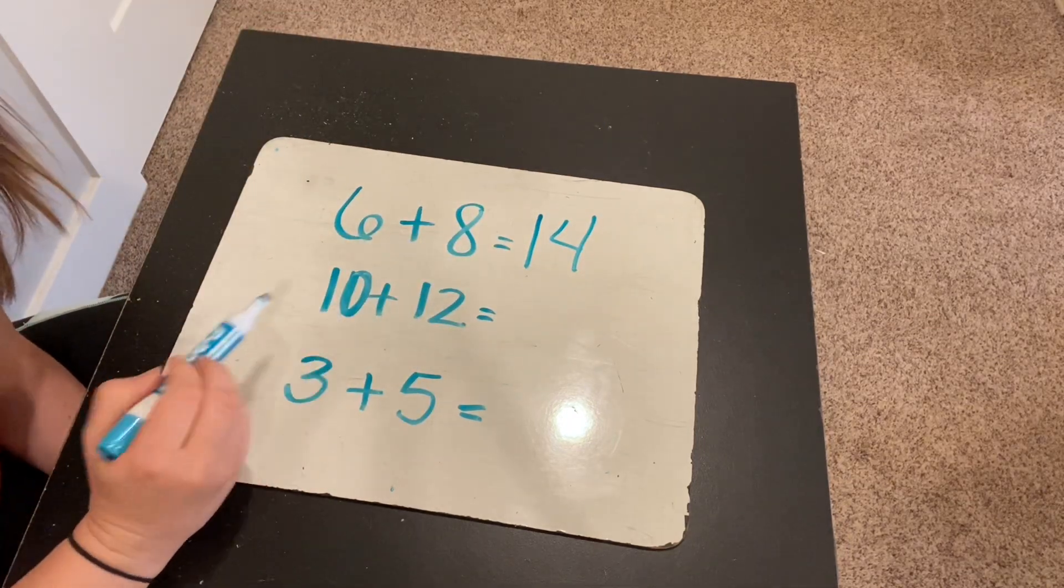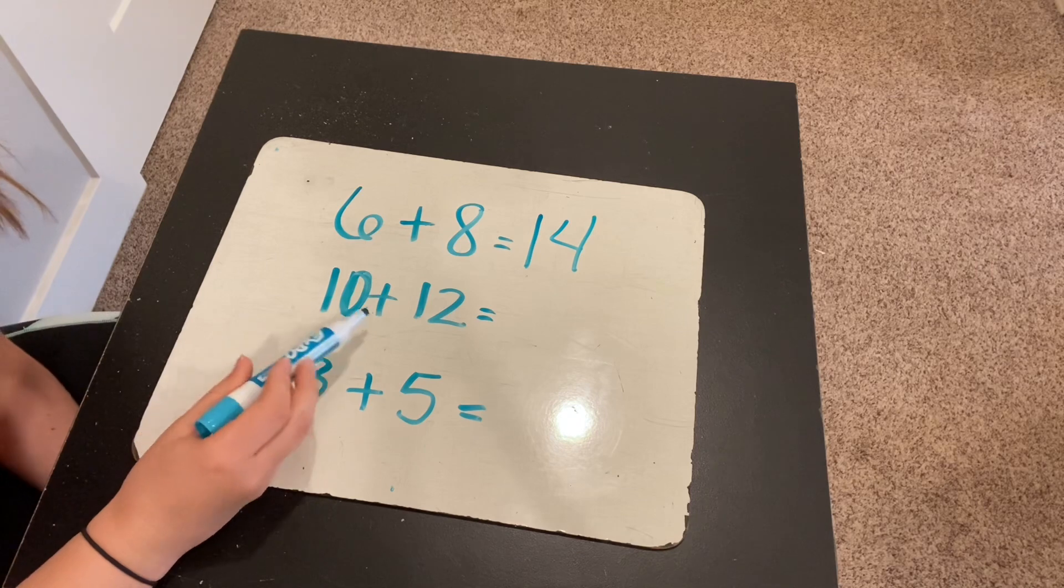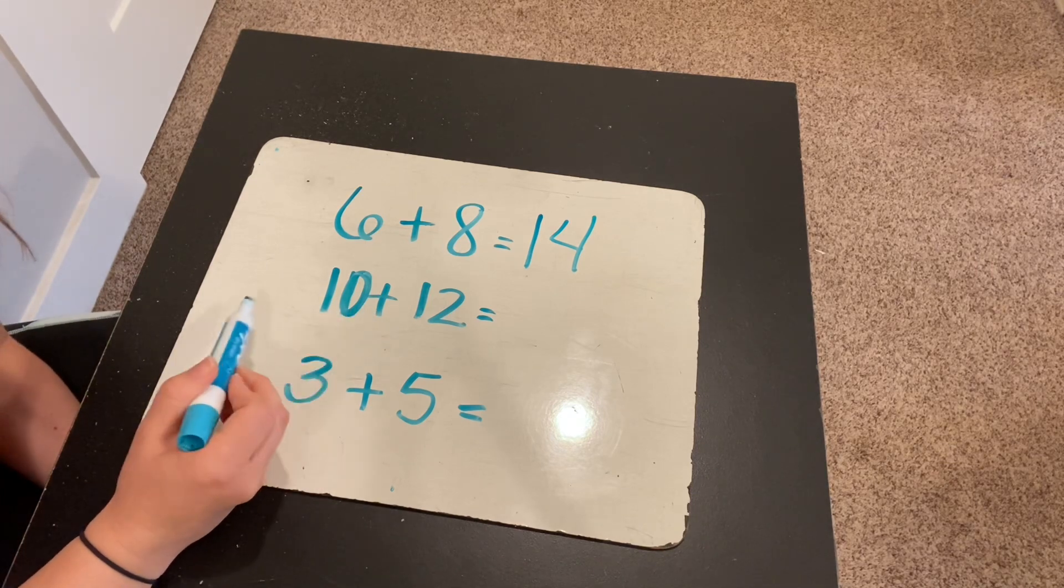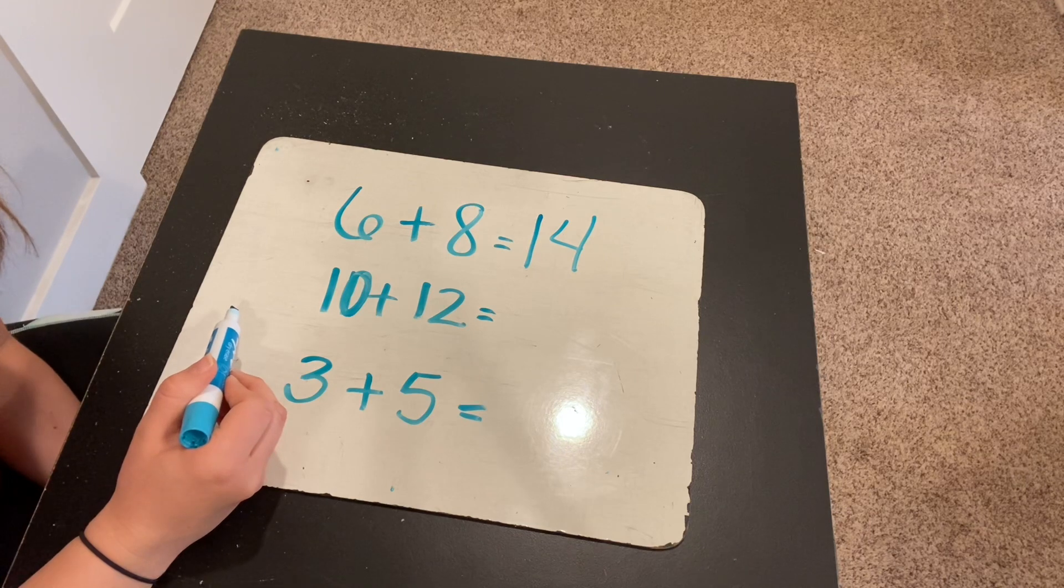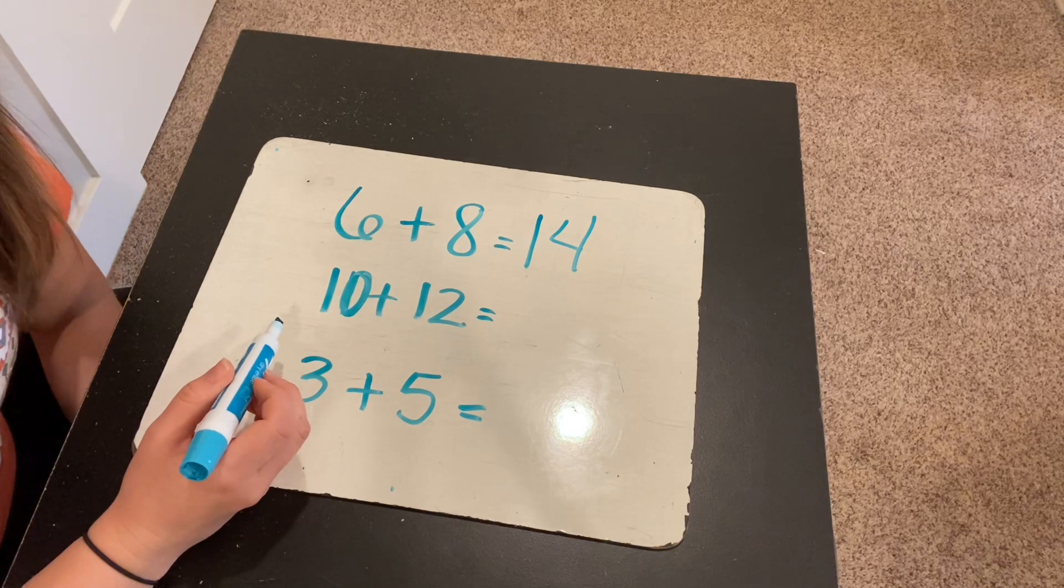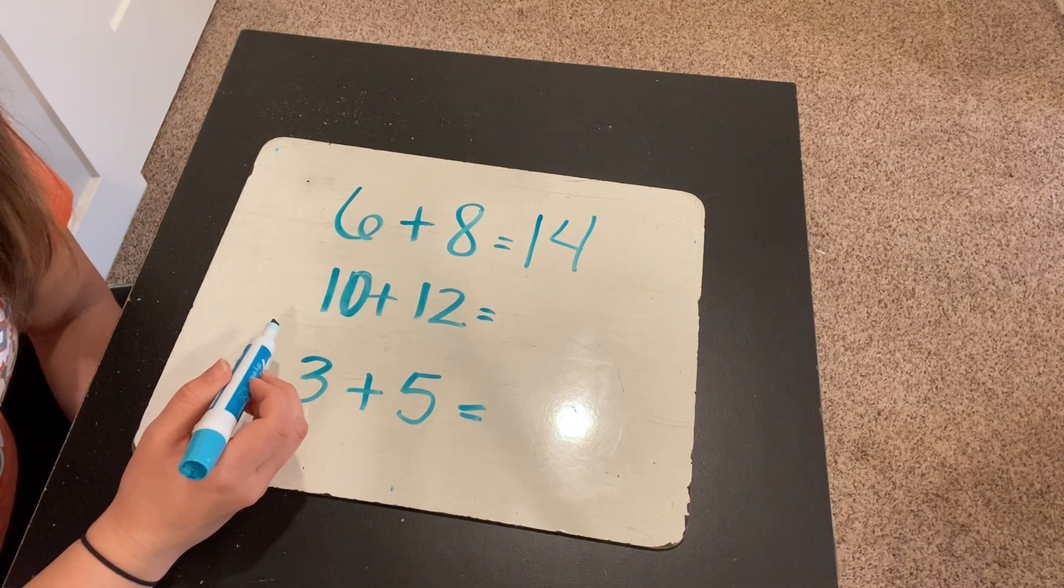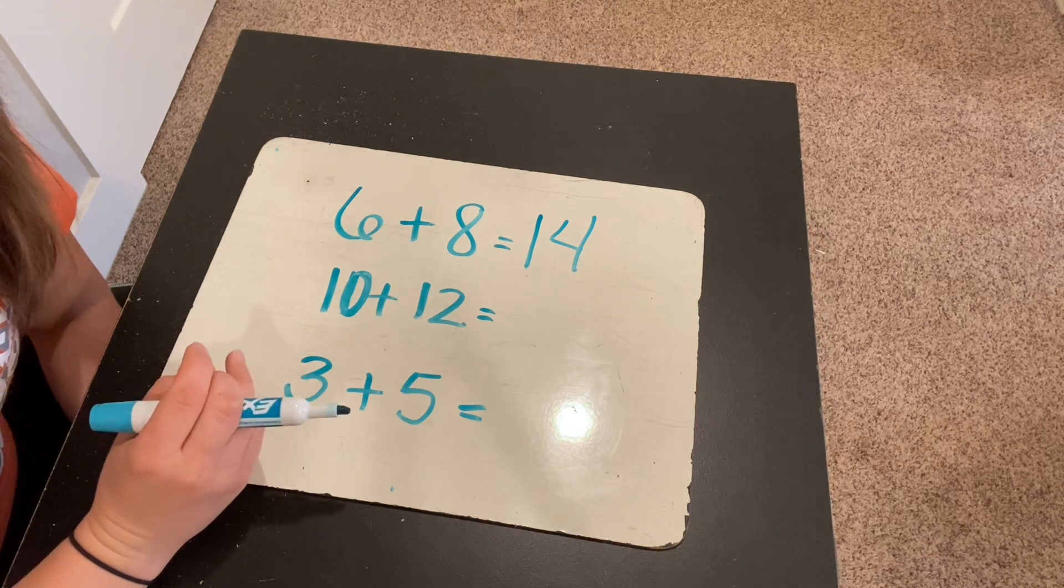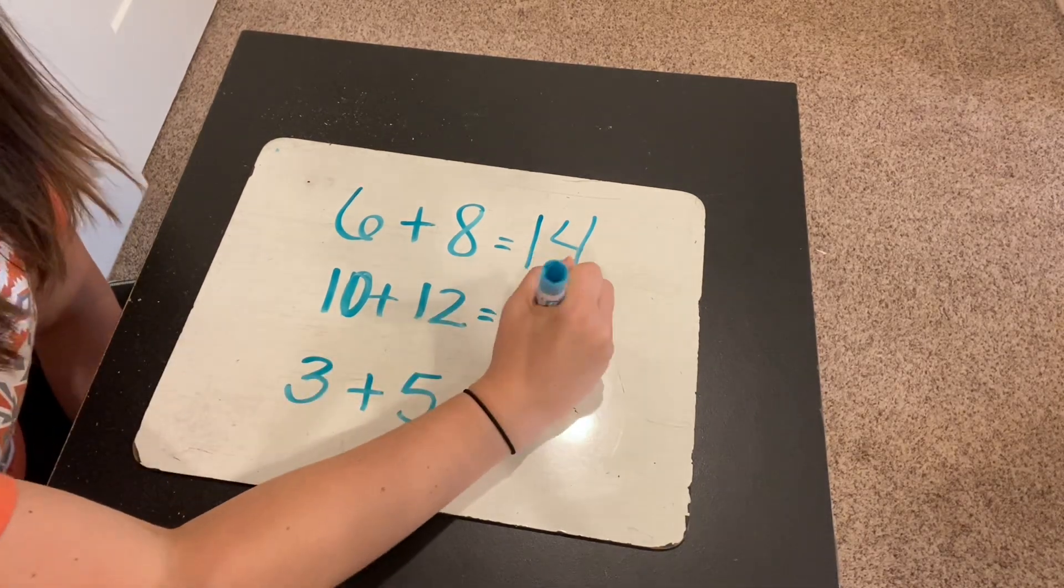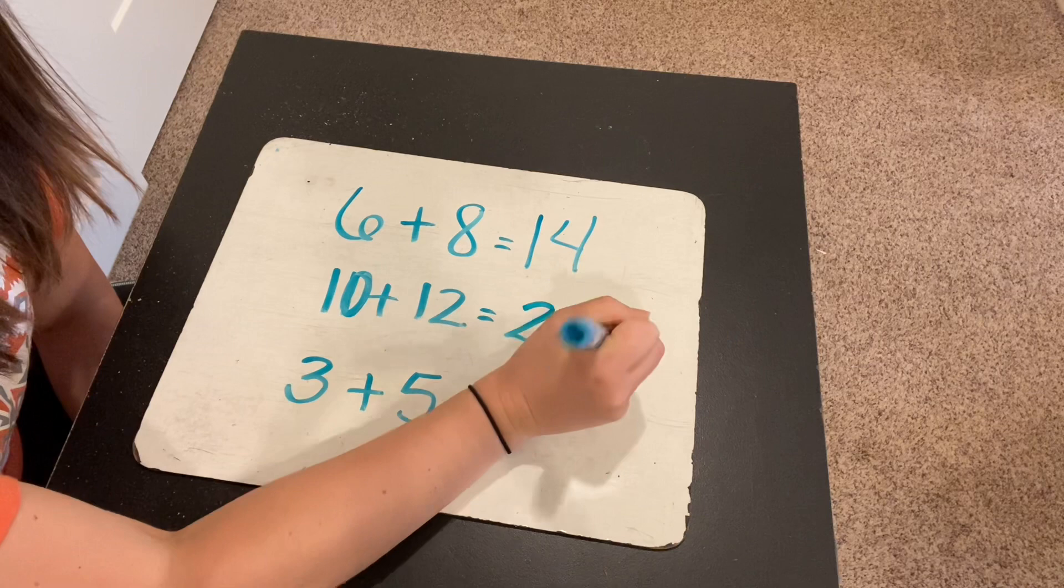All right, 10 and 12. What number comes between 10 and 12? 10 plus 12. What number comes in between 10 and 12? 11 comes in between 10 and 12. So what is 11 plus 11? If you don't know that double, 11 plus 11 is 22. So 10 plus 12 is 22.